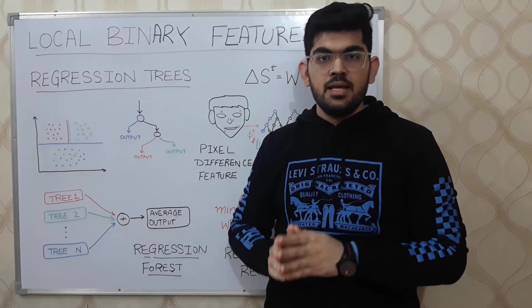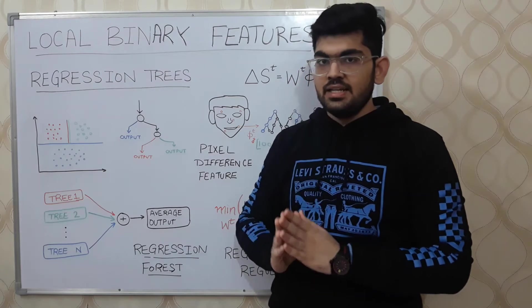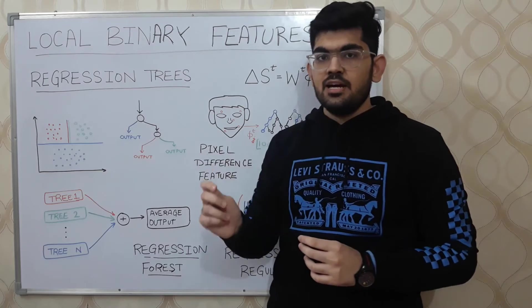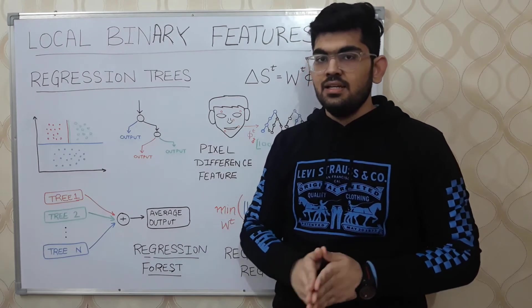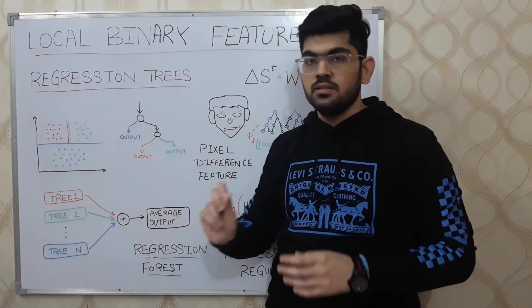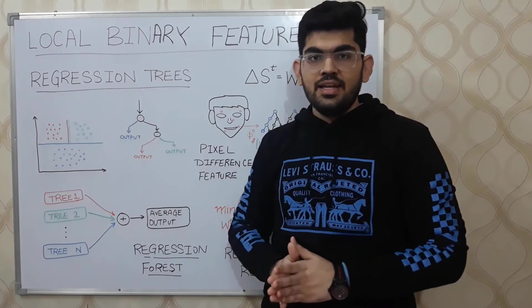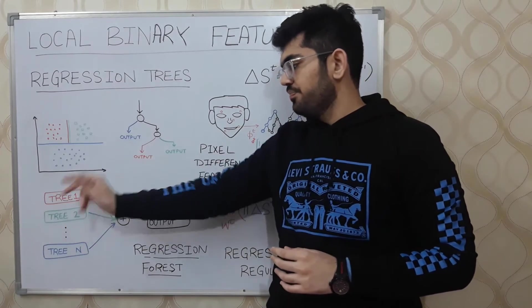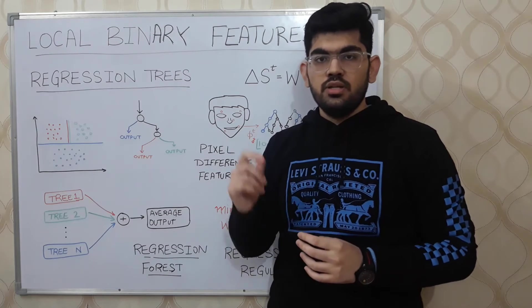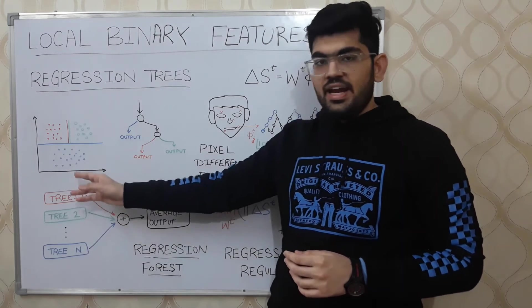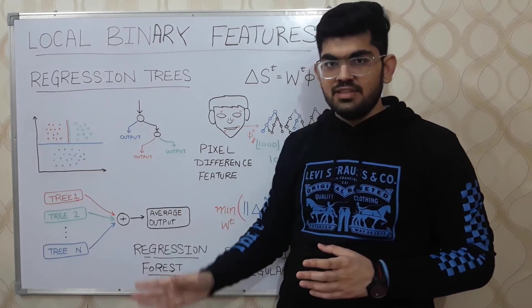A regression forest is generated by randomly sampling data points from the actual dataset. In our case, it would mean that we would randomly sample some data points from this complete dataset. Then we train a regression tree based on that randomly sampled data, let's name it tree1. Then in the next step, we again randomly sample data points from this complete dataset and train a regression tree on that again, naming it tree2. Similarly, we train n such trees. During final prediction time, given a new data point, we would input that data point to all the n trees and then calculate the average value of the predictions of all the trees and give that as a final output.